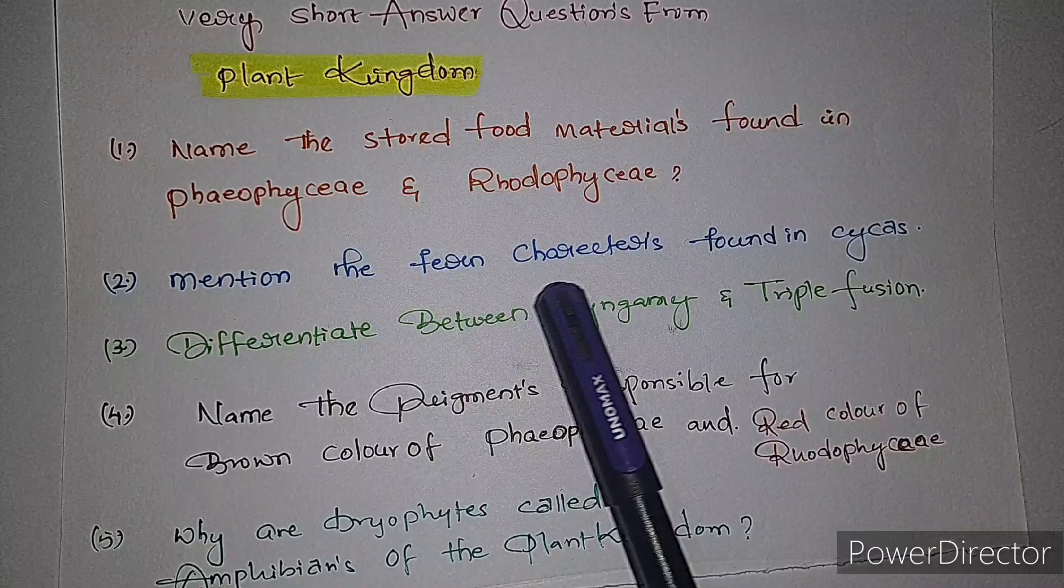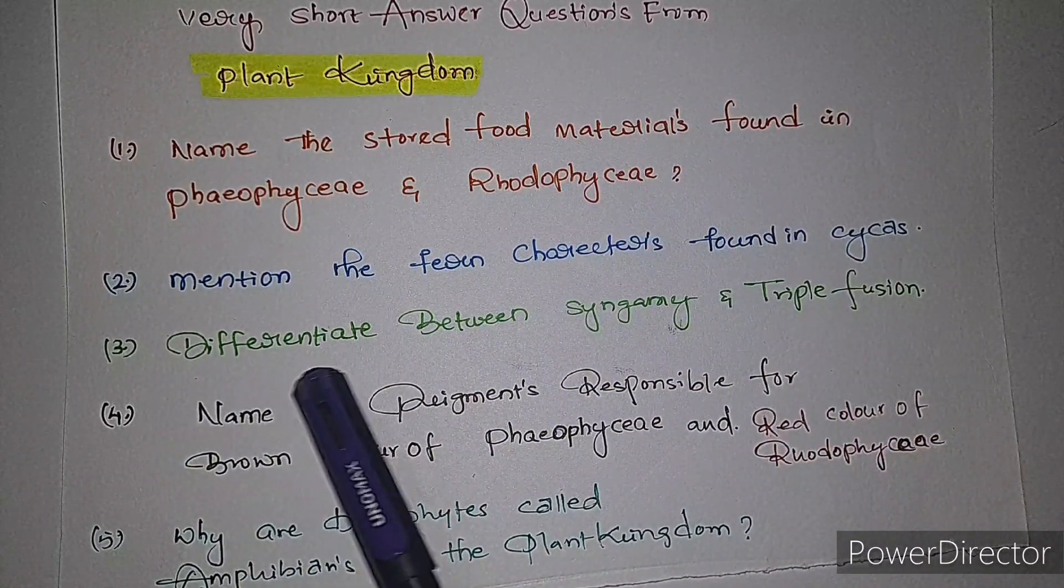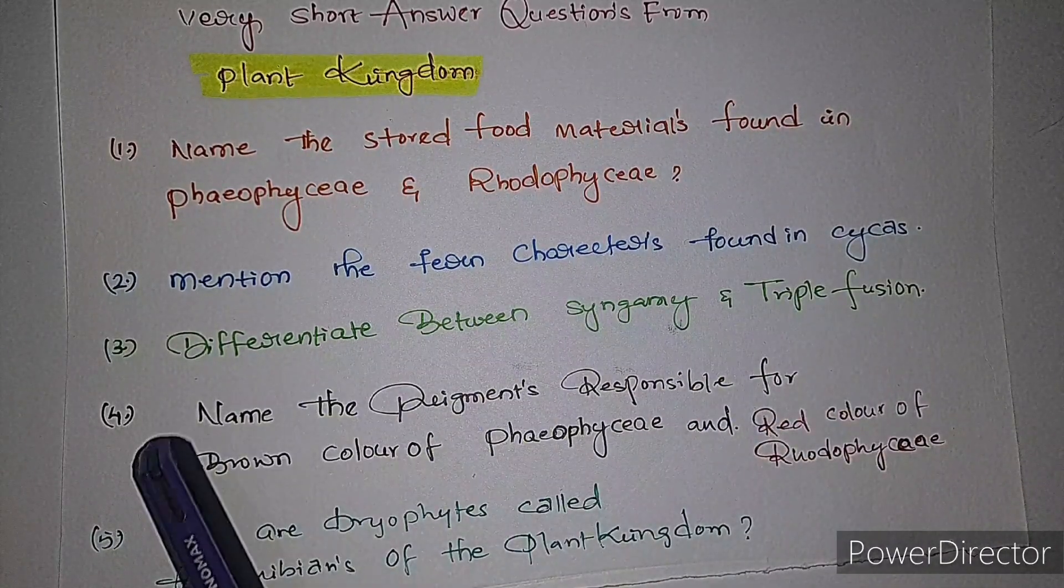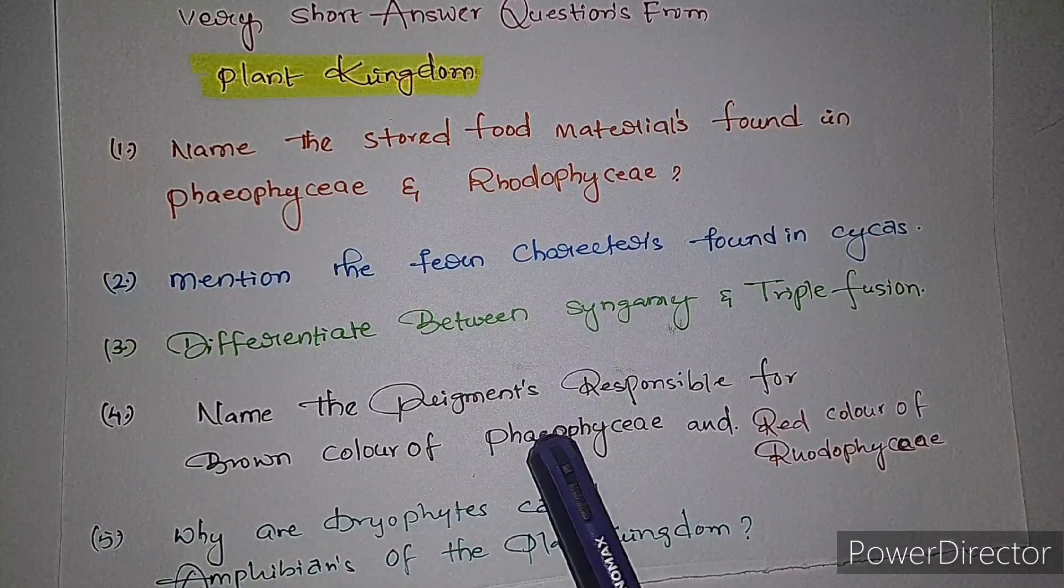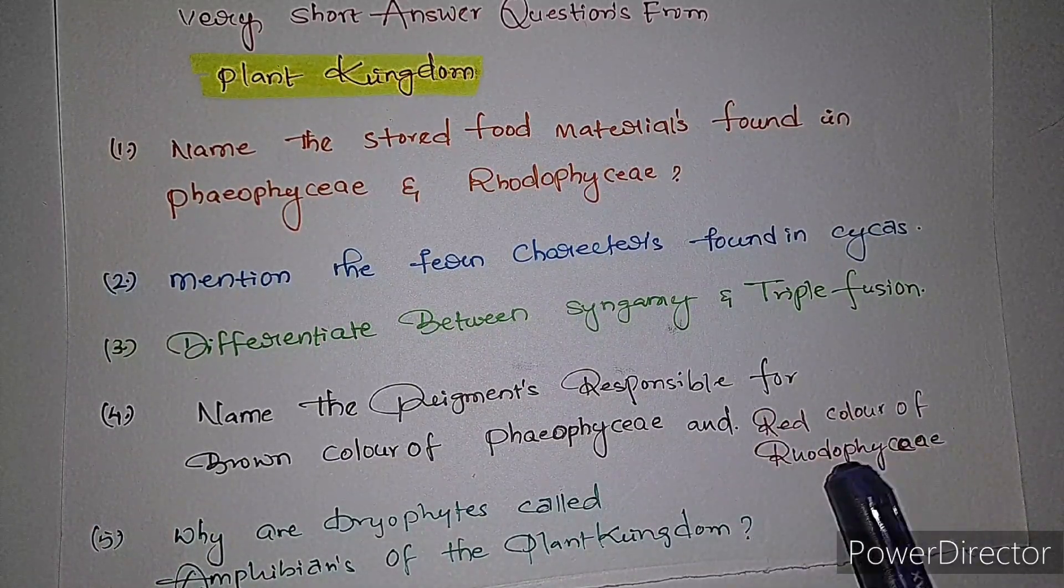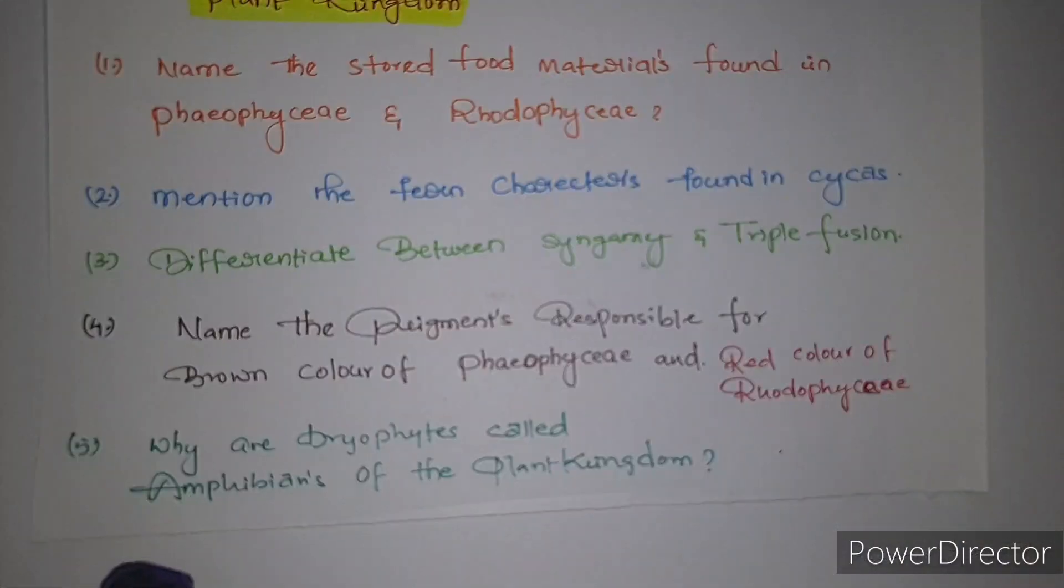Third question: differentiate between syngamy and triple fusion. Fourth question: name the pigments responsible for brown color of Phaeophyceae and red color of Rhodophyceae. Fifth question: why are bryophytes called amphibians of the plant kingdom?